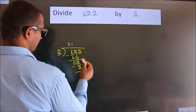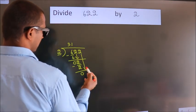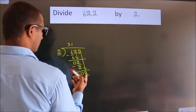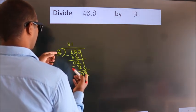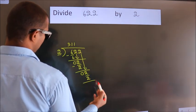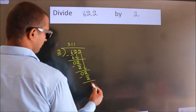After this, bring down the beside number. So 2 down. When do we get 2 in the 2 table? 2 times 1 is 2. Now we subtract. We get 0.